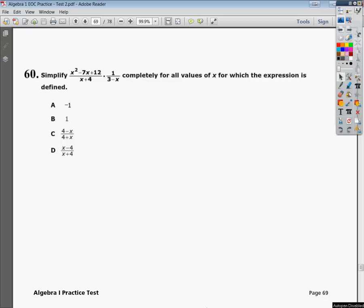Welcome. This is the Algebra 1 practice test 2, question number 60. The question says simplify x squared minus 7x plus 12 over x plus 4 times 1 over 3 minus x completely for all values of x for which the expression is defined, which means you don't have to worry about any exclusions in the domain. Now, this question I'm going to solve two ways. Number one, a mathematically appropriate way, and the second way is a cheap calculator trick that I'm not proud of, but it does work.